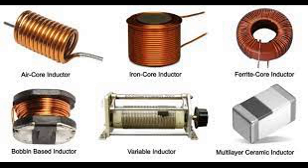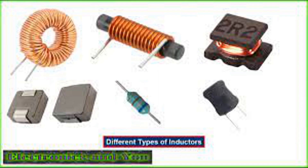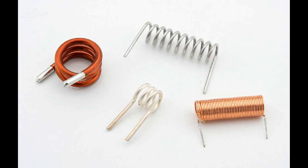The operation of a coil is based on Faraday's law of electromagnetic induction, which states that a changing magnetic field induces a voltage in a nearby conductor. When an electric current flows through a coil, it creates a magnetic field around it, and if the current changes, the magnetic field also changes. This change in the magnetic field induces an electromotive force, EMF, or voltage across the coil.